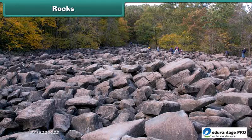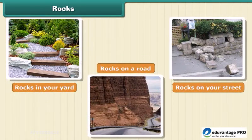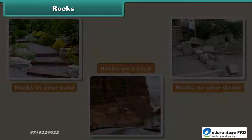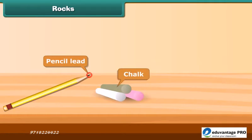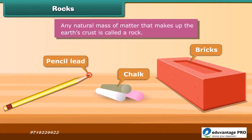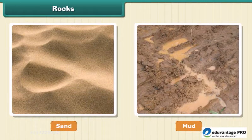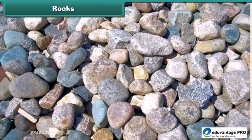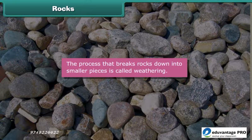Rocks are all around us. You can see rocks in your yard, on your street, on a road — everywhere you look. Pencil lead, chalk, and bricks are all rocks. Any natural mass of matter that makes up the earth's crust is called a rock. Do you know sand and mud are also rocks? Rocks can be of different size and color. The process that breaks rocks down into smaller pieces is called weathering.